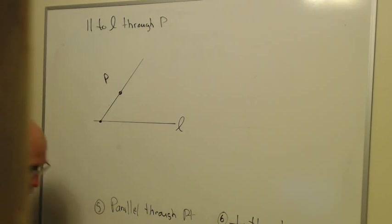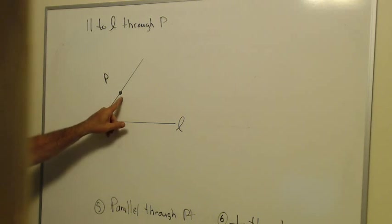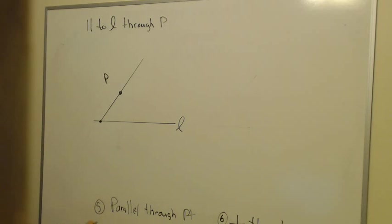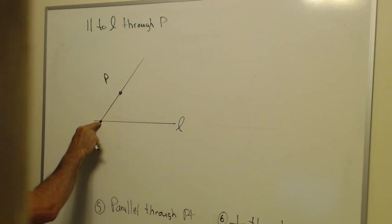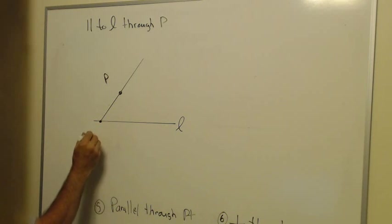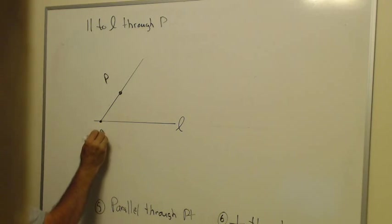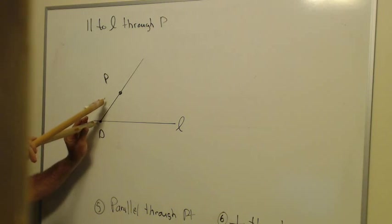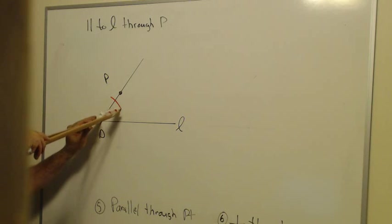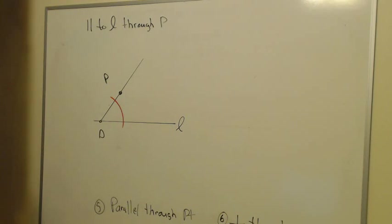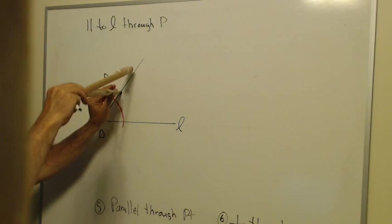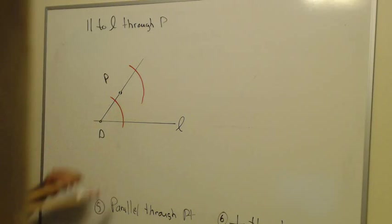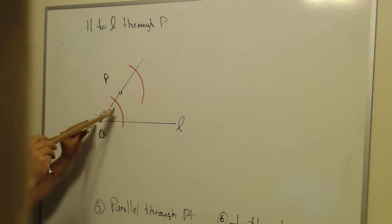What I'm going to do now is construct another angle up here at P that's congruent to the new angle I just made. If you remember how that goes, I'm going to put the pointy end here at this point. I'll just put a letter on it, call it D. I'm going to put the pointy end on D and draw an arc that cuts both sides of this angle I've just created. I'm going to go up to P and draw a similar arc at that same compass setting.